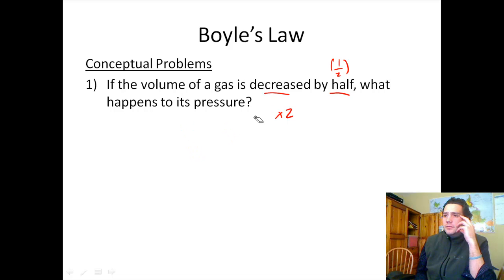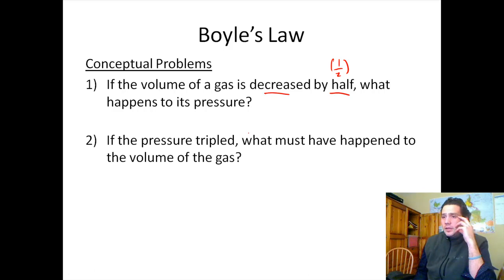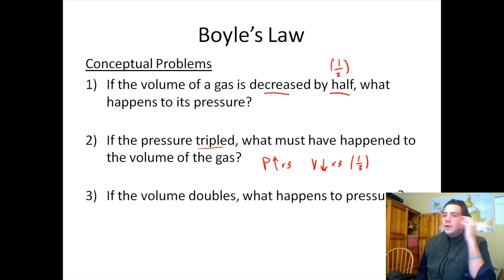Let's get rid of my... I'm ready here so we can see the next question. Now, what happens if we triple the pressure? So we're going to take the pressure up. If we take the pressure up, that means volume has to go down. What must have happened to the volume of the gas? Well, if we are taking the pressure up by a factor of three, volume needs to go down by a factor of three. That's the same thing as multiplying that volume by one-third. You're going to get one-third of the volume.